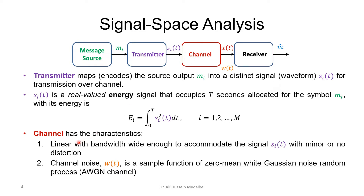Going from the transmitter to the channel: the channel is assumed to be linear with bandwidth wide enough to accommodate the signal with minor or no distortion. Then we have channel noise. The noise is a sample function of a zero-mean white Gaussian noise random process — AWGN: additive, meaning it is added to the signal; white, meaning the power spectral density covers all frequencies equally; Gaussian, describing the PDF. For our case we assume white noise.